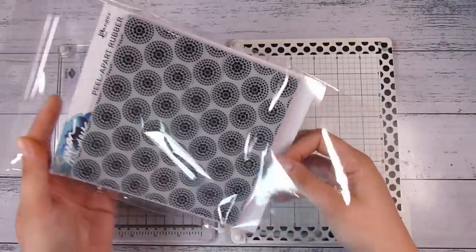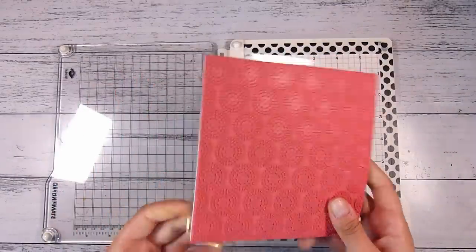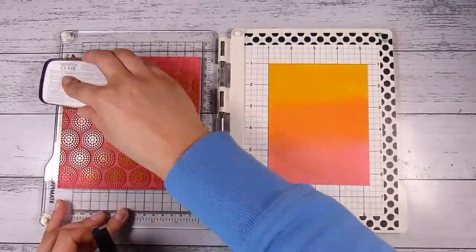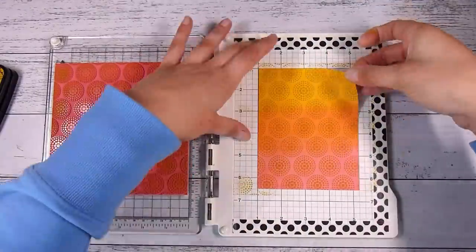Or if you don't want to piece together your own background, you could use a background stamp. This one is the Stippled Circles from Simon Hurley, and this is just a really fun one. This has lots of pull-apart pieces to it. There's also singular pieces that you can pull out of it, or you can just use it as a whole background stamp like I am here.